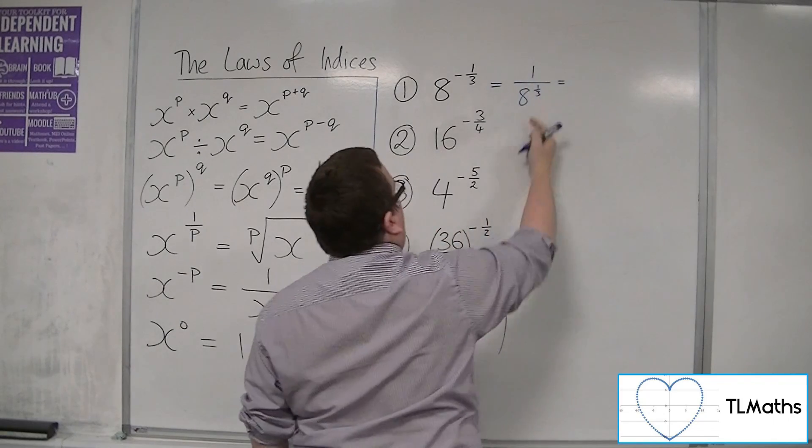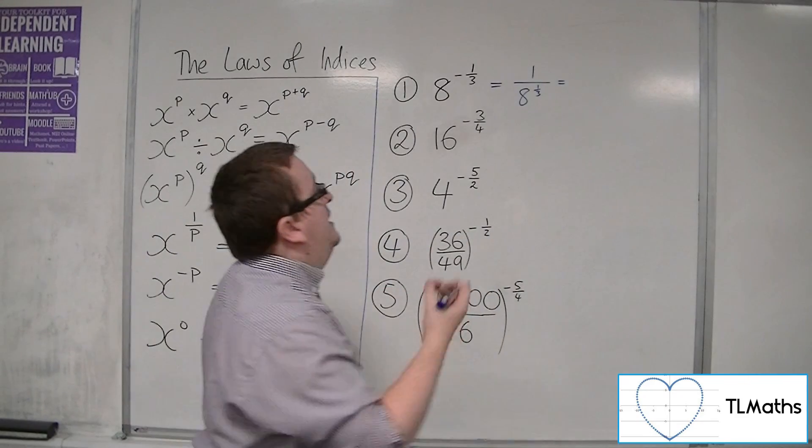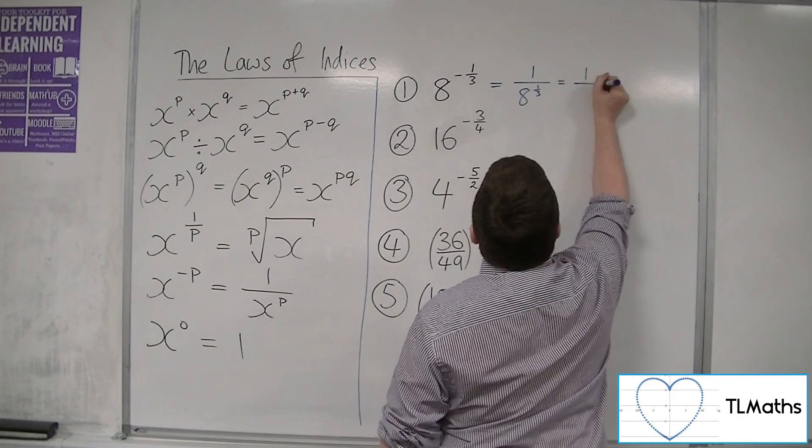Now I know that 8 to the third means the cube root of 8. The cube root of 8 is 2. So this is actually just 1 half.